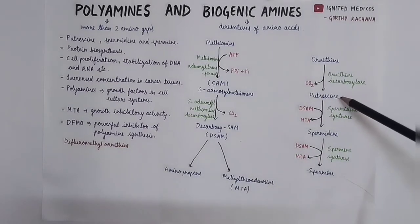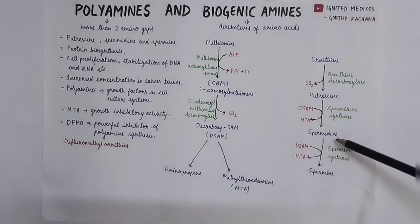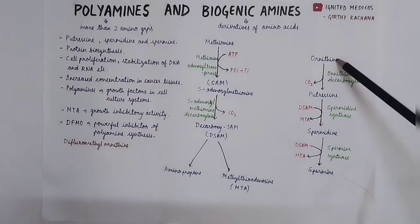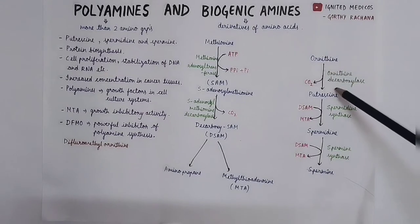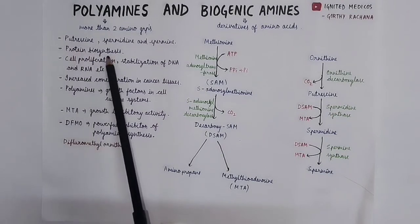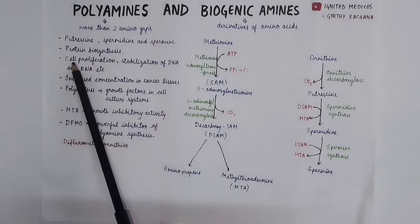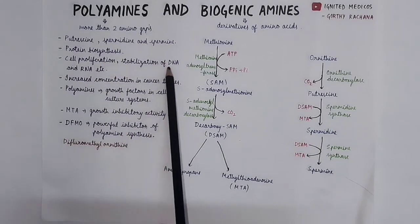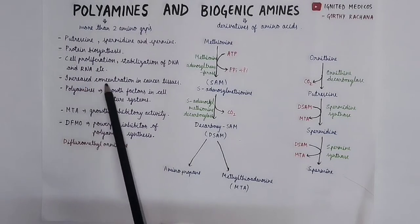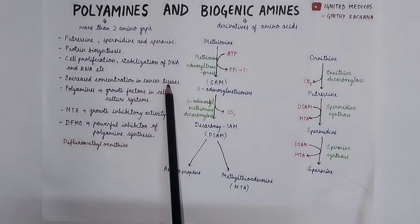Important polyamines are putrescine, spermidine, and spermine. These three are formed from ornithine by decarboxylation reaction. These are required for protein biosynthesis and also involved in cell proliferation, stabilization of DNA and RNA, etc. Its concentration is increased in cancer tissues.